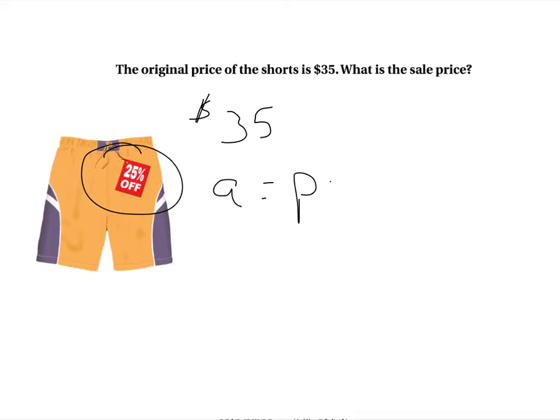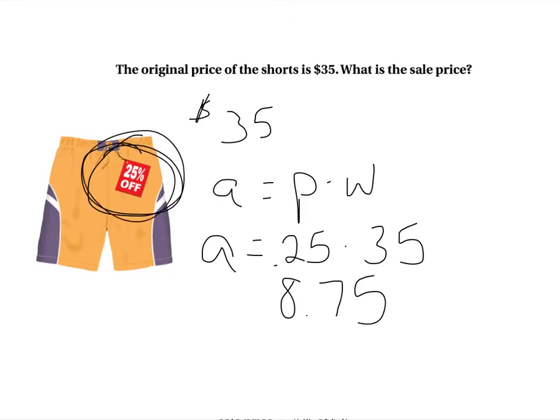A equals P times W. My percentage is 25%, so I would do 0.25. The whole is $35, and I'm looking for, obviously, A. When I go ahead and multiply this, I get 8.75. Now, that is not the sale price. That is 25% of the $35. So, I have to then subtract $8.75 from the $35. And when I do that, I would get $26.25.